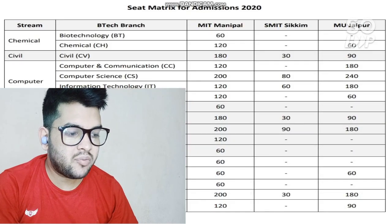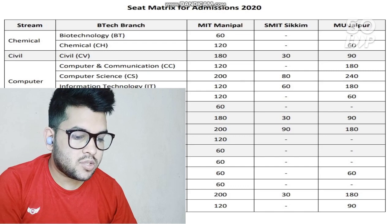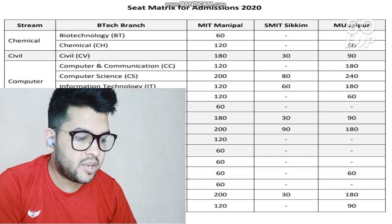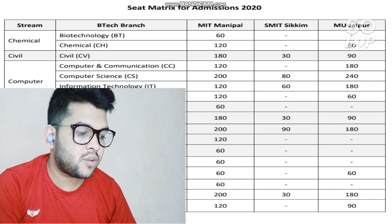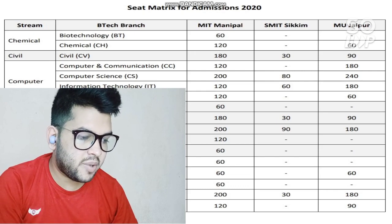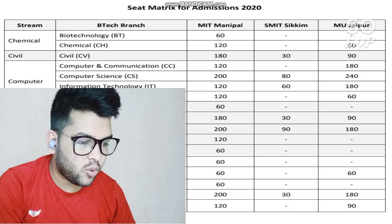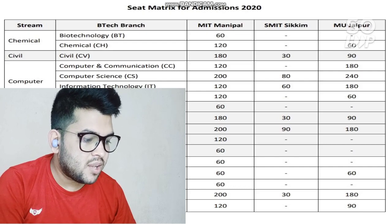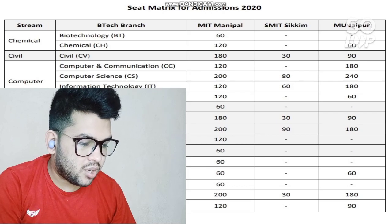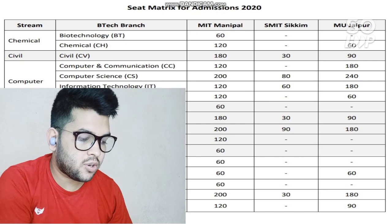Here is the seat matrix for 2020. You can check all the seats for the main campus and Jaipur campus. There were 200 seats for Computer Science in the main campus and 240 seats in the Jaipur campus. For Data Science and Engineering there were 120 seats in the main campus and 60 seats in the Jaipur campus. There is some increment in some of the branches that I will discuss later in this video.